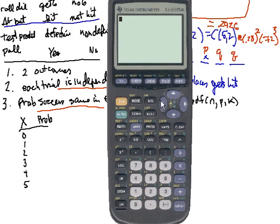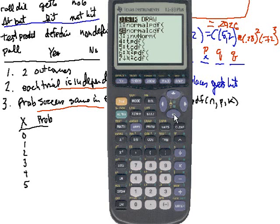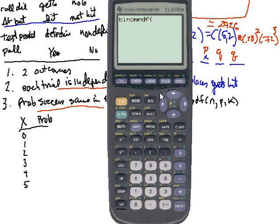How do we find this binomial function? Well, it's one of the distributions functions. We go into the second there, VARS. And now we have to go down and find it. It's down in the second menu here. And here it is. It's binomialpdf. So we just have to fill in the parameters.